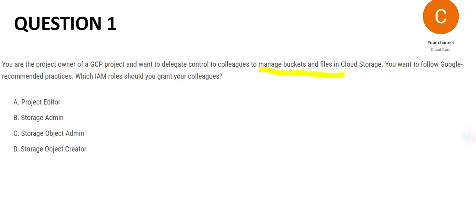Now C and D are almost the same — one is storage object admin and one is storage object creator. Suppose you want someone to go into your house and cook something for you. You give them access to the kitchen, but that person won't be able to retrieve your phone — that's not their job. So storage object creator means the colleague only has access to create an object, which is not what we want. We want them to manage buckets and files. Giving someone access to create when you need them to manage are completely different things. That is why D is not the answer.